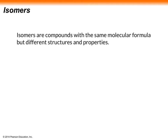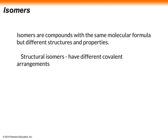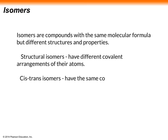Let's take a look at isomers. Isomers are compounds with the same molecular formula but different structures and properties. We can divide isomers into a few different types. Structural isomers have different covalent arrangements of their atoms. Cis-trans isomers have the same covalent bonds but differ in spatial arrangements.